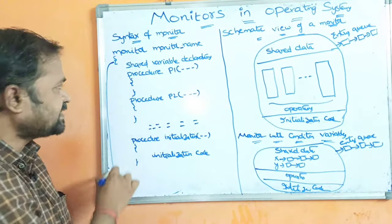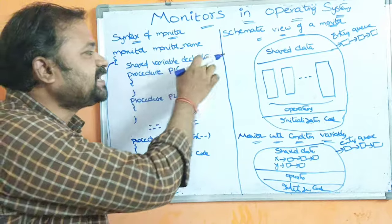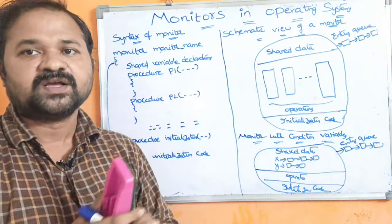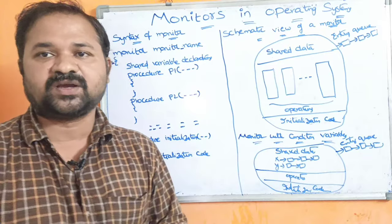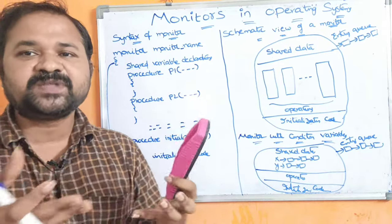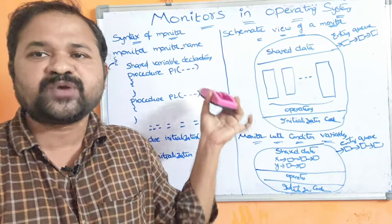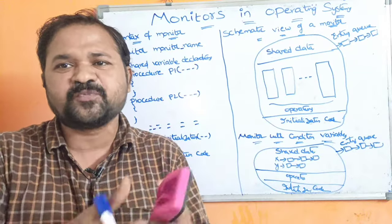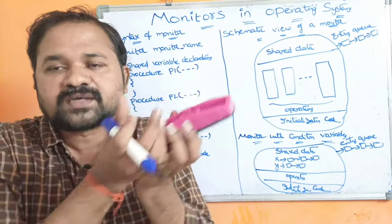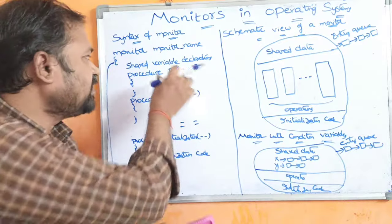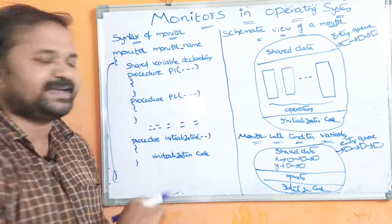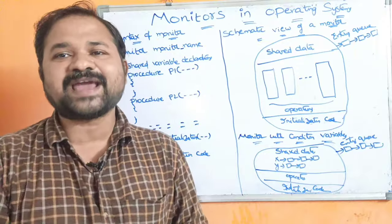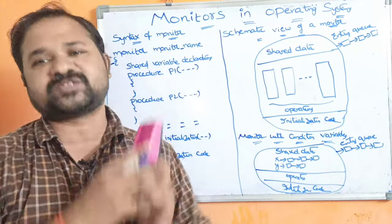Within the curly braces, we have shared variable declarations. We can declare shared variables first. If five processes want to execute in the monitor, all five processes want to make use of some shared variables, so those variables will be declared here. Shared variables are those that can be accessible by all the processes.